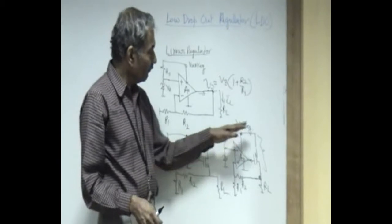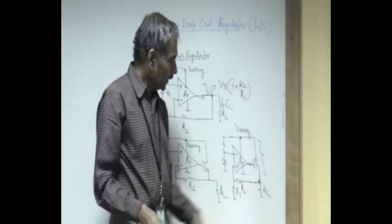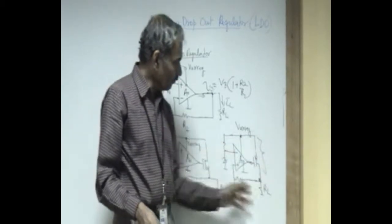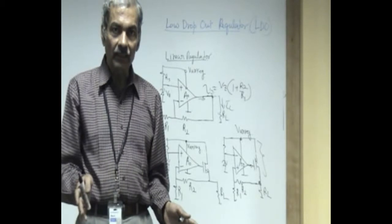So this is the advantage of low drop out regulator, and you have to design the compensation scheme for the increased gain of A_naught times gm times r_L.